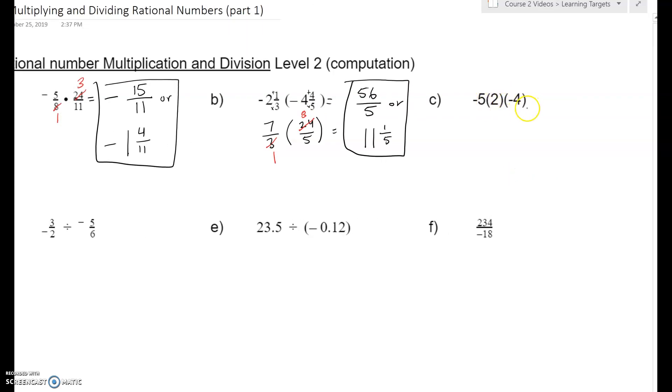Here we've got 3 factors being multiplied. Let's just start here. A negative 5 two times is a negative 10. So 2 negative 5s, that's negative 10. And then negative 10, negative 4. Negative 10 negative 4 times? Well, that's just the opposite. Negative times a negative is a positive result. So 10 times 4, 40, positive 40.